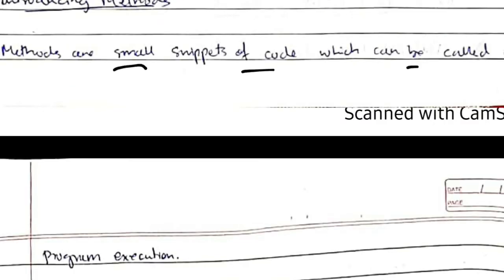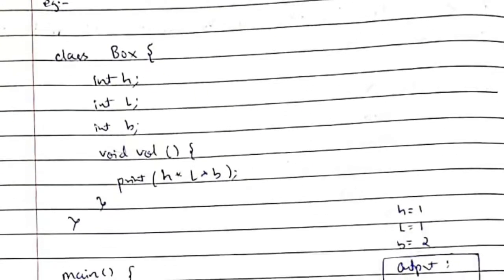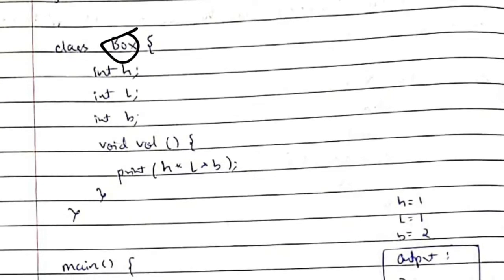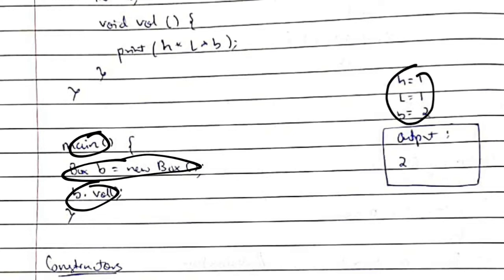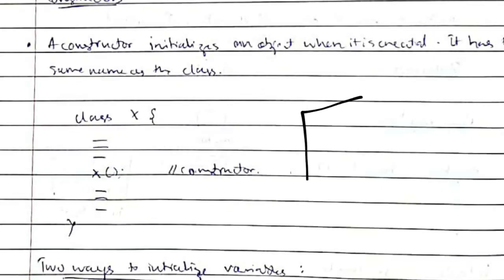A method is a small snippet of code which can be called whenever needed. For example, in a Box class, if I want to calculate the volume, I don't need to write 'h * l * b' every time. I can define a function 'volume' that prints h * l * b, and whenever I need it I can call 'b.volume()' from the main function.